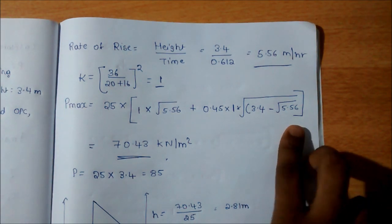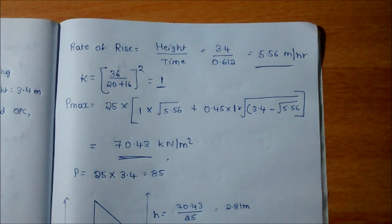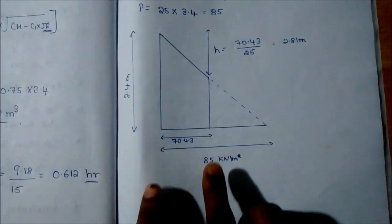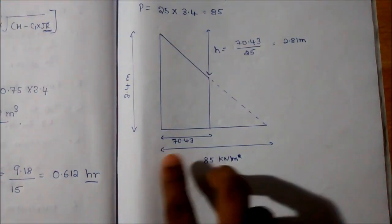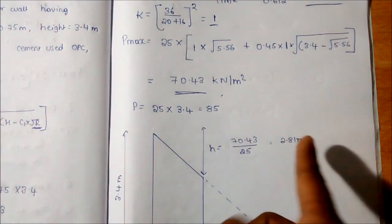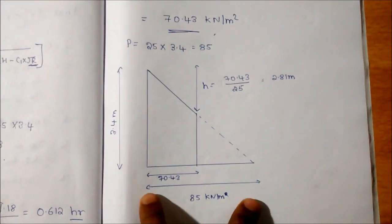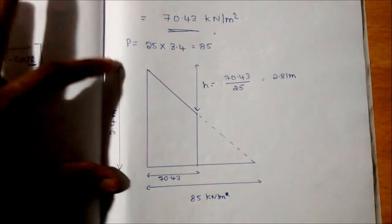Then we will get the P max pressure as 70.46 kilonewton per meter square. So that comes here around 70.43 is the P max value. To determine the P value, just multiply the density of concrete with the height. We will get 85, that is the P value. This is the height of element.